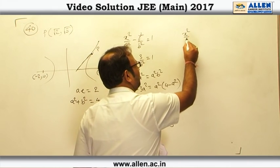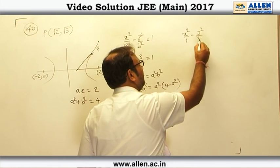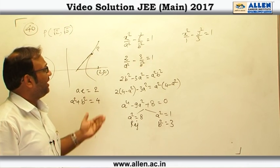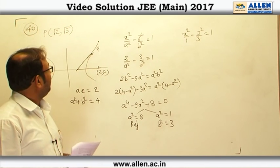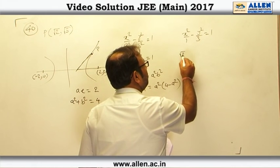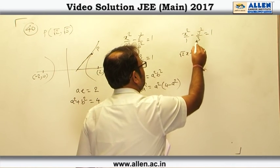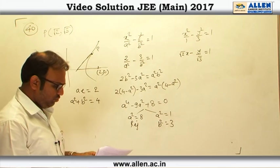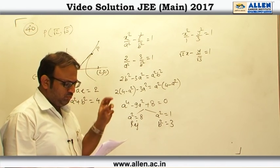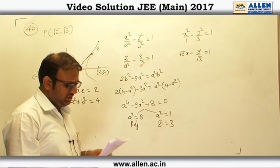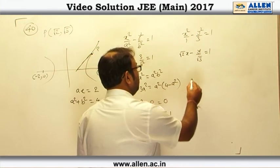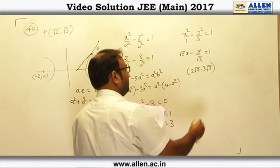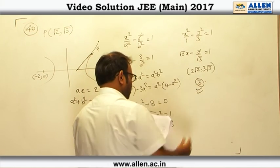Taking A square equal to 1, we get B square equal to 3, and this gives us our hyperbola. So the equation of the hyperbola is x square by 1 minus y square by 3 equals to 1. This is the point lying on that hyperbola and we need to write the tangent. By the simple rule xx1, yy1 we can directly write the tangent: root 2 times x minus y root 3 by 3, that makes it y by root 3, equal to 1. Putting the given coordinates, 2 root 2 comma 3 root 3 satisfies this, which is option number 3.